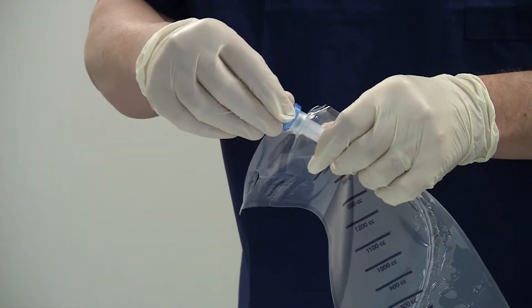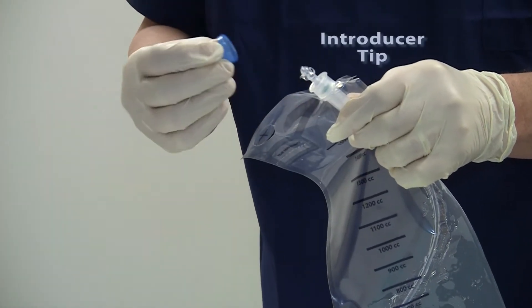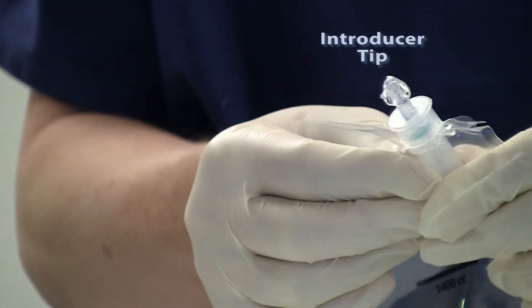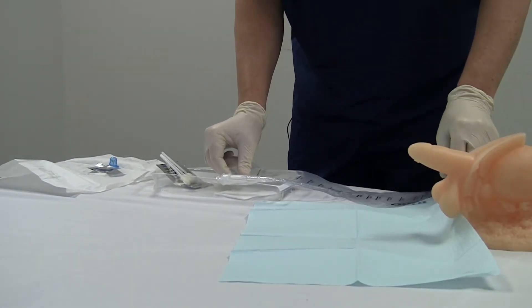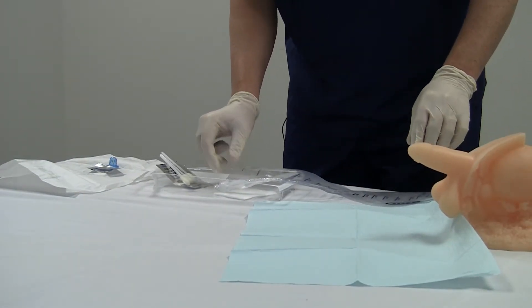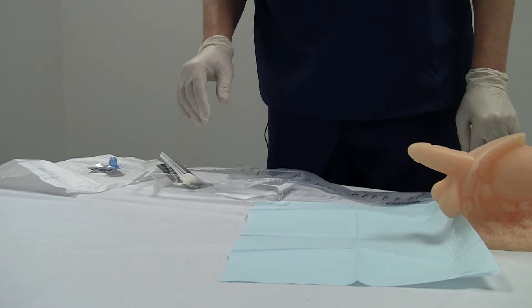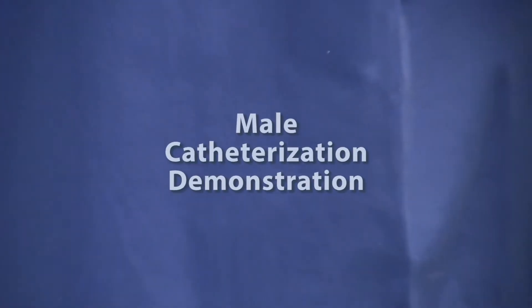Now, I'm going to remove the cap and expose the introducer tip. I'm just going to discard the cap and place the closed system catheter back in my sterile field with the introducer tip inside the tray so that it remains sterile. So now we're ready to go to the patient.